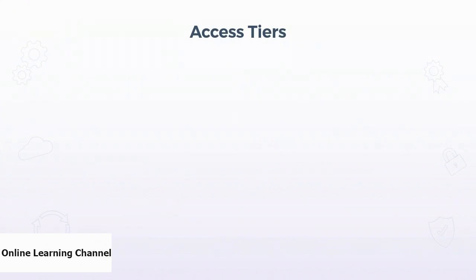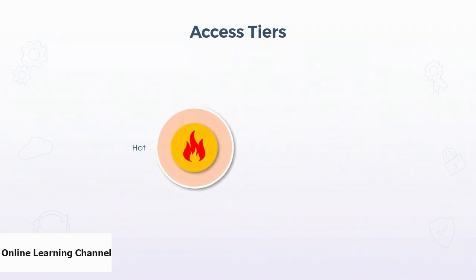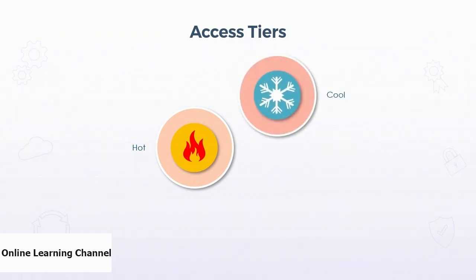Access tiers are available on Blob Storage accounts regardless of whether they are standard or premium tier, and offer cost-effective methods for storing data based on its frequency of access. The hot tier is used for storing data that is frequently accessed or written to; this tier is set at the storage account level and has the highest storage cost. The cool storage tier is used for data that is not frequently accessed, offering a reduced storage cost but higher cost for data access, and is set at the account level.